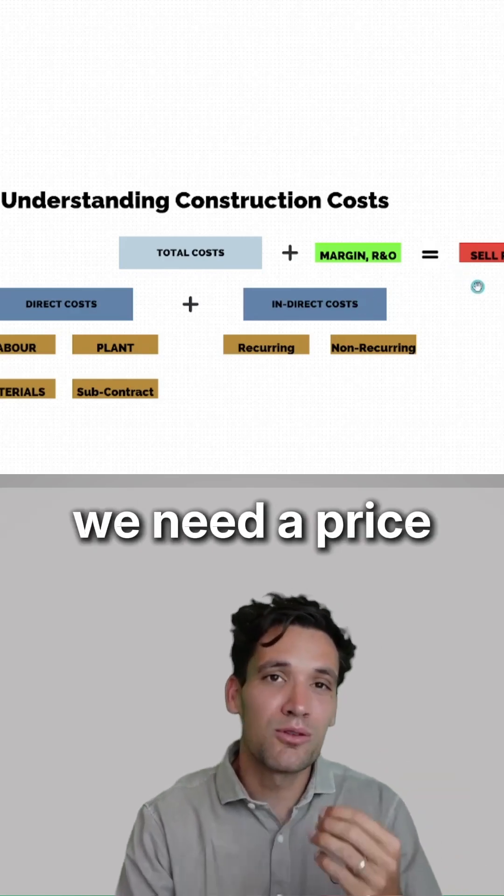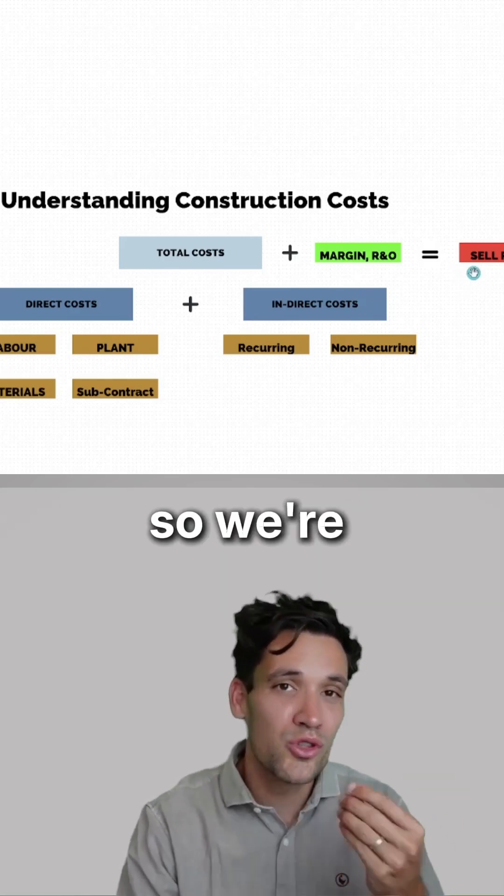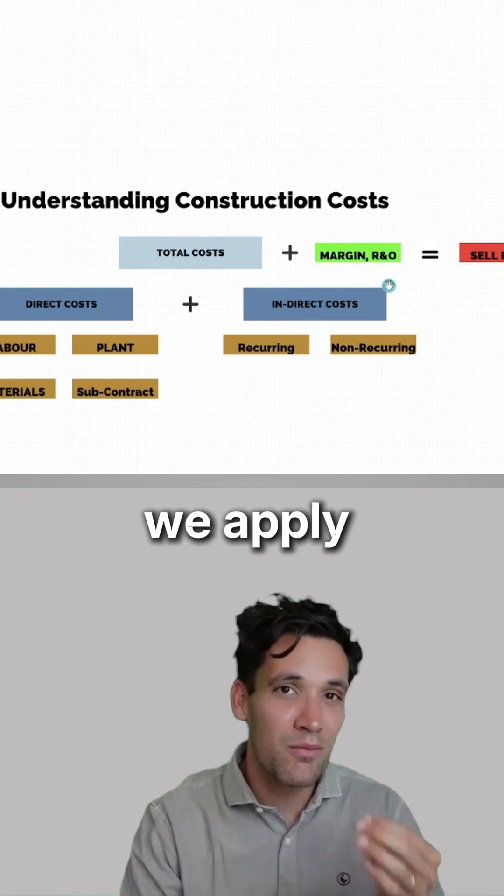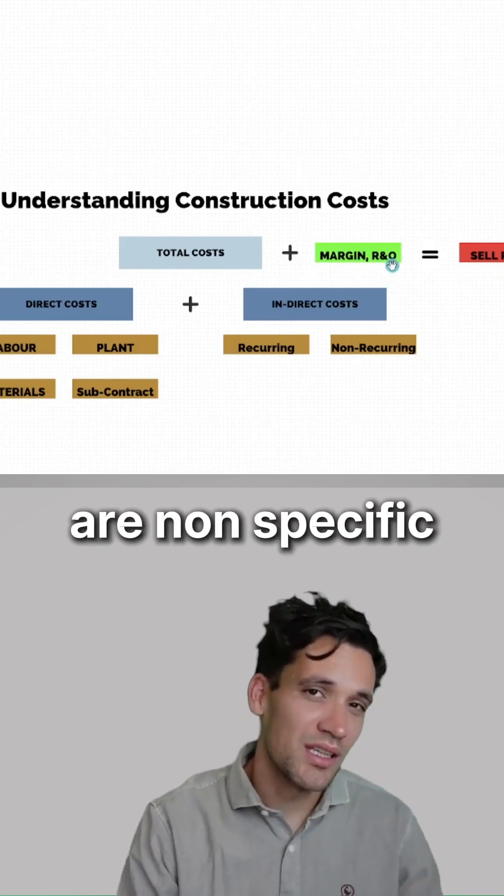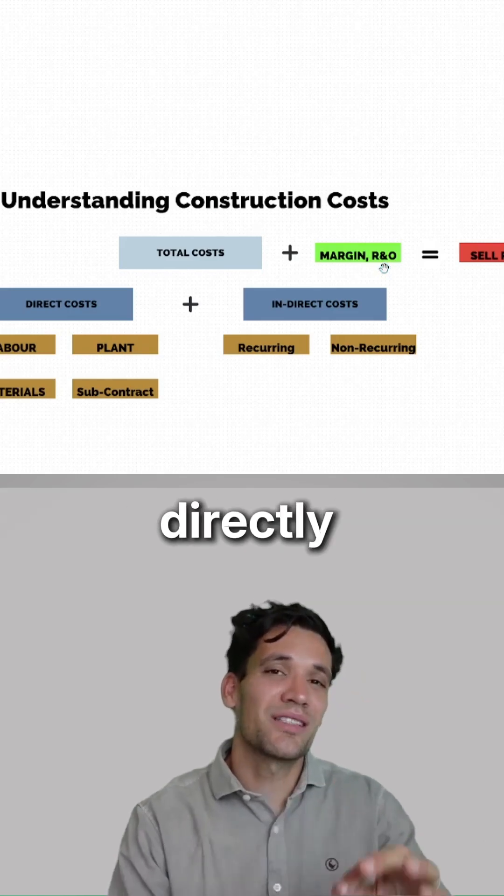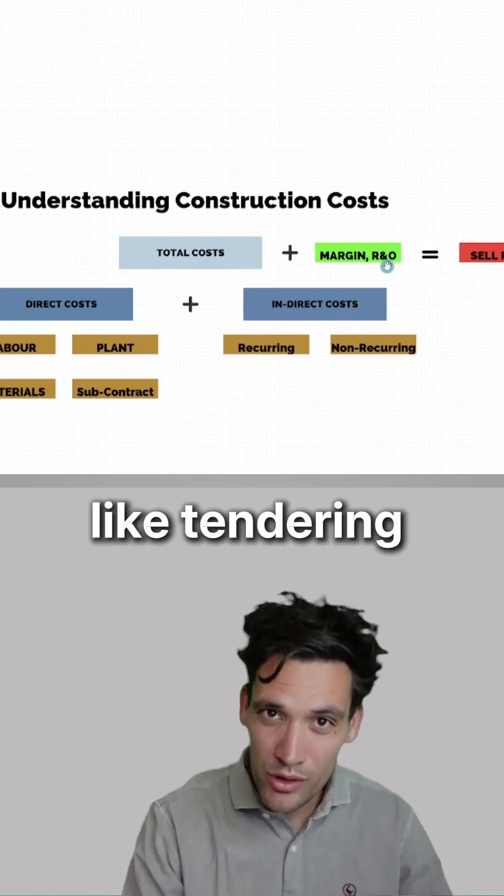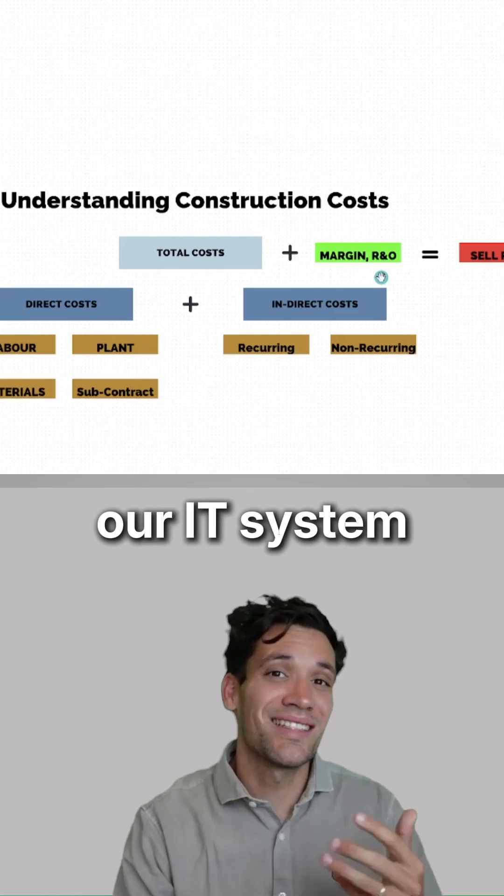And then on top of that, we need a price we're going to bill our client for, so we're making money. That's where we apply our profit margin and corporate overheads. Corporate overheads are our non-specific business running costs that aren't directly attributable to any project, like tendering for new work or the cost of our IT system.